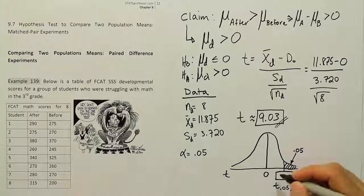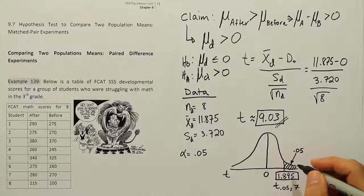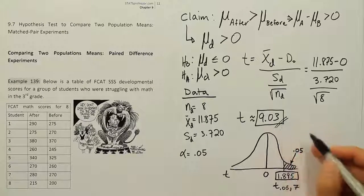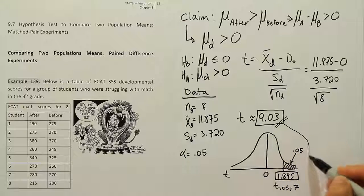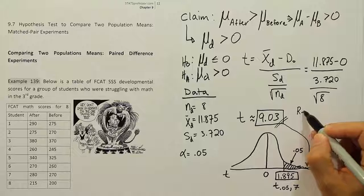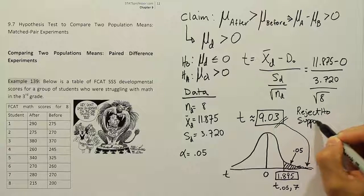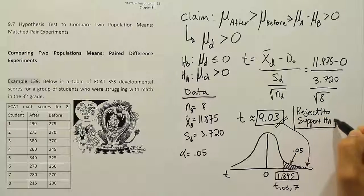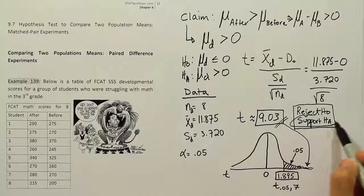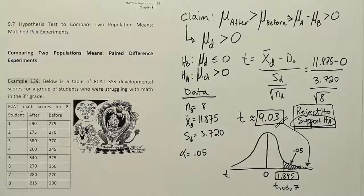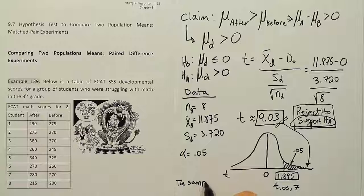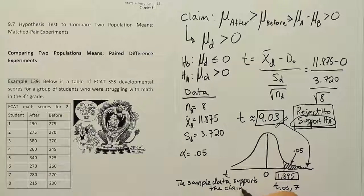The critical value is 1.895. With our test statistic of 9.03, it's clearly way in the shaded region, so we will certainly be rejecting the null hypothesis. We conclude that we should reject H₀ and therefore support Hₐ. Since our claim is Hₐ, we support the claim. The claim was that the test prep was effective at improving scores, so the sample data supports the claim that test prep is effective at improving student scores.